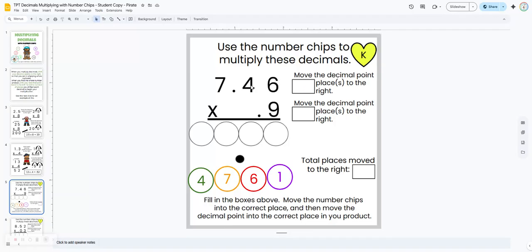The first thing it asks them to do is type in how many places they're moving that decimal point to the right. So here, they're going to type in two. Second row, they're going to type in one. And that gives them a total of three places they move the decimal point to the right.